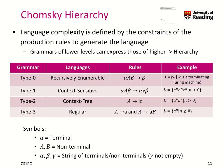This brings us to the Chomsky Hierarchy. Language complexity is defined by the constraints of a production rule to generate a language. We distinguish four types of grammars that form different types of languages.